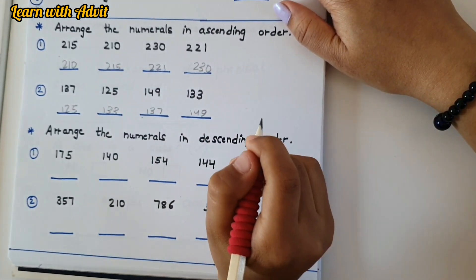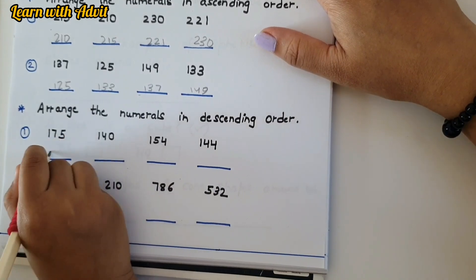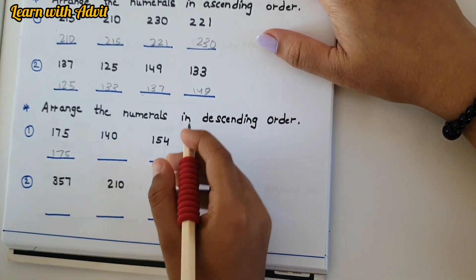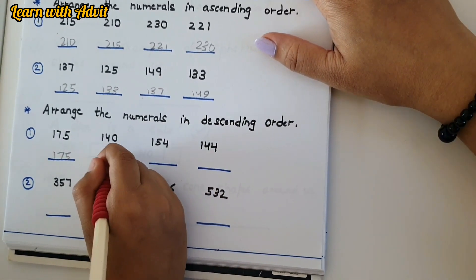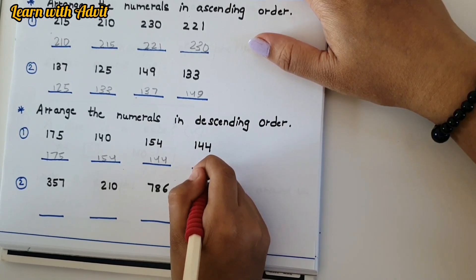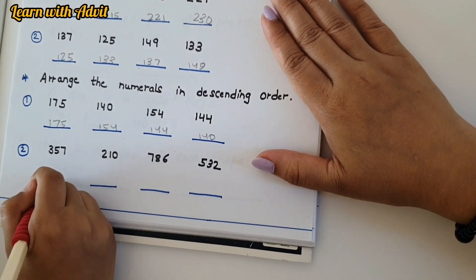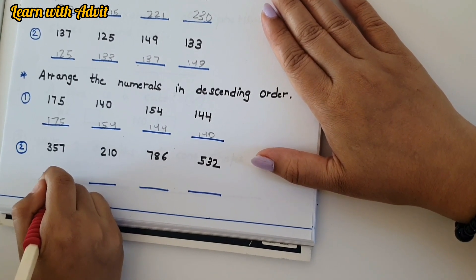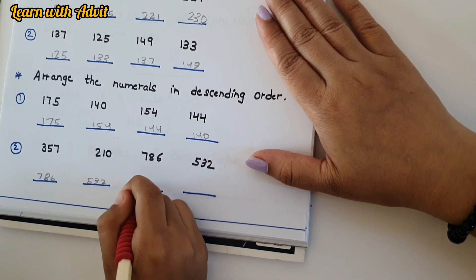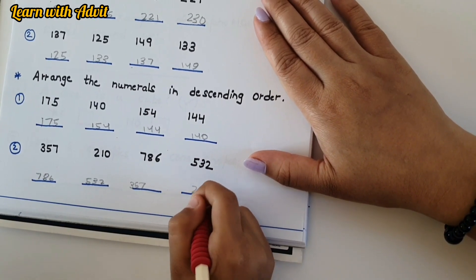Arrange the numbers in descending order — means big first, then small. So 175 is the biggest, then 154, then 144, then 140 — very good, that's the smallest. The next one: which is the smallest? Then 210 — good job!